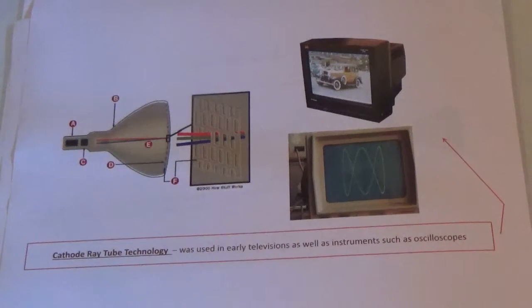In all, the cathode ray tube experiment led to the creation of a more modern atomic model, including subatomic particles such as the electron.